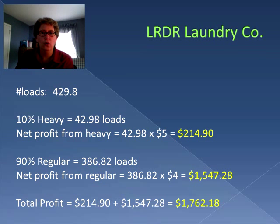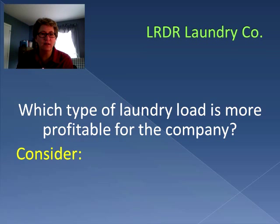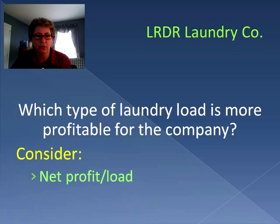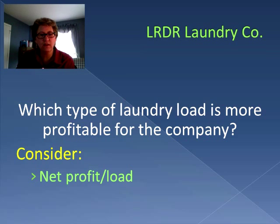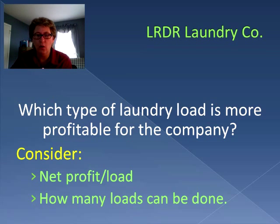But now we have to consider which type of load is actually more profitable for the company. Should they be doing more heavy loads or more normal loads? This is where we have to consider a couple of things. First, we have to consider what the net profit per load is. We already have that information — the heavy load provides a net profit of $5 per load and the normal load gives a net profit of $4. But we also need to consider how many loads could be done using the same resources.